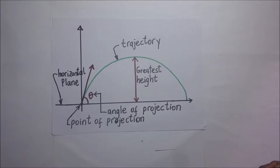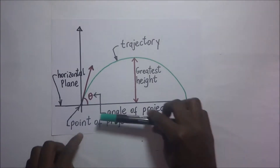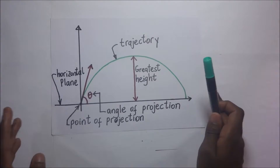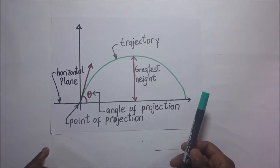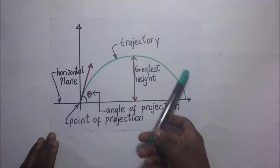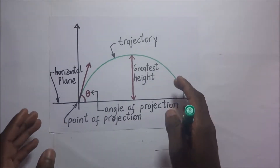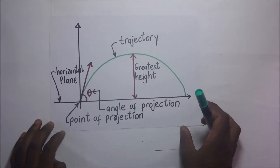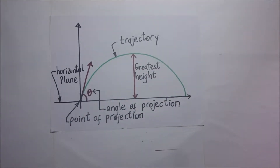A projectile motion is basically a particle that is thrown at an angle to the horizontal, under the influence of gravity. If you kick a ball up or throw a stone into the air and it comes back down, it creates what we call projectile motion, which is always influenced by gravity. In our study of projectile motion, we shall assume that the forces of air resistance are negligible, so we will not be putting them into consideration.